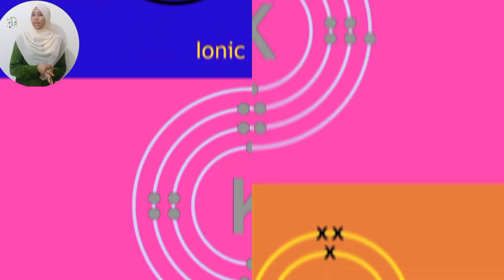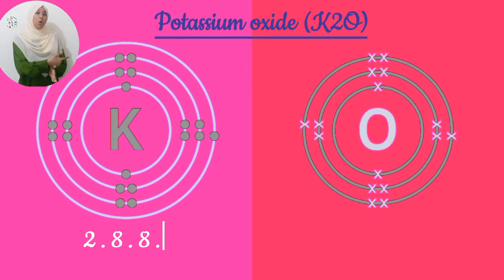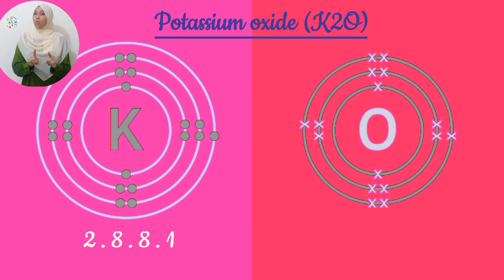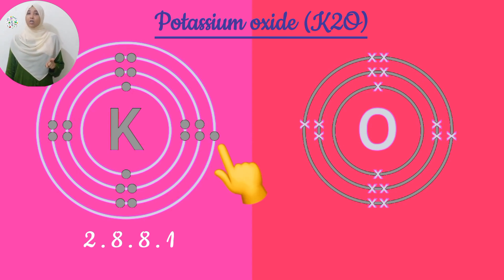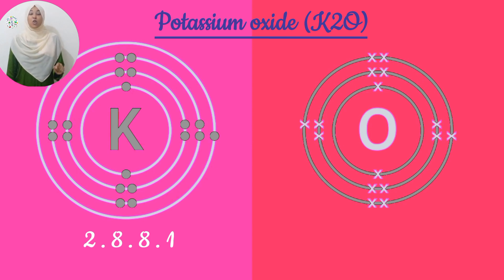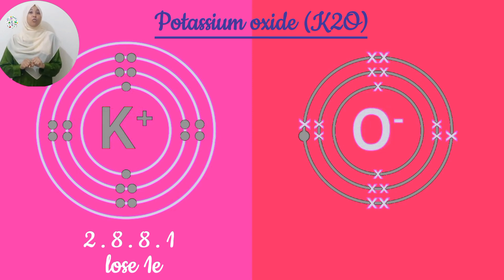Our last example: potassium oxide. Potassium is the metal, and oxygen is the non-metal. The electron configuration of potassium is 2, 8, 8, 1, because it has 19 electrons. Potassium belongs to group 1, along with lithium and sodium — all members of group 1 have 1 valence electron, just as all halogens in group 7 have 7 valence electrons. You should know 2 members of the halogen group: chlorine and fluorine. Members of group 1 lose 1 electron to form an ion, so potassium loses its valence electron to form a potassium ion with an electron configuration of 2, 8, 8.